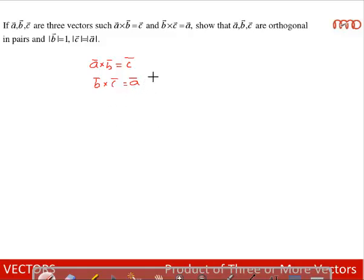So we can say the pair of vectors A, B, B, C, C, A are all mutually perpendicular so they are orthogonal in pairs.